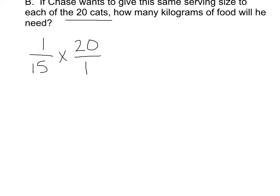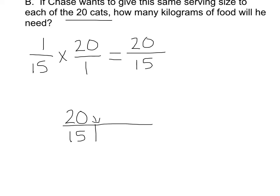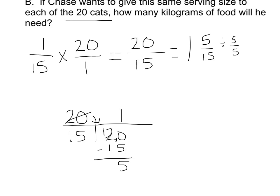This twenty is really a twenty over one, so now I can just multiply across. One times twenty is twenty, fifteen times one is fifteen. I can remember from previous lessons, when I want to turn an improper fraction into a mixed number, that my twenty goes diving into the water. Fifteen goes into twenty one time; one times fifteen is fifteen. When I subtract, I have a remainder of five, so I have one and five-fifteenths. I know that five goes into both five and fifteen — whatever you do to the bottom, you do to the top. Five divided by five is one, fifteen divided by five is three.